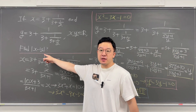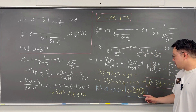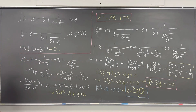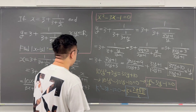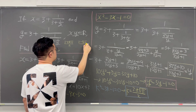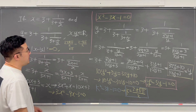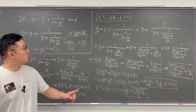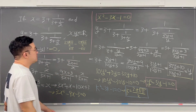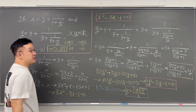Now let's find the absolute value of x minus y. Case 1: if both x and y equal the same value — either 3 plus root 13 over 2, or 3 minus root 13 over 2 — then the absolute value of x minus y equals 0. Case 2: if x is 3 plus root 13 over 2 and y is 3 minus root 13 over 2 (or vice versa), then x minus y equals plus or minus square root of 13. Taking the absolute value, that gives square root of 13. So the answer is 0 or square root of 13.